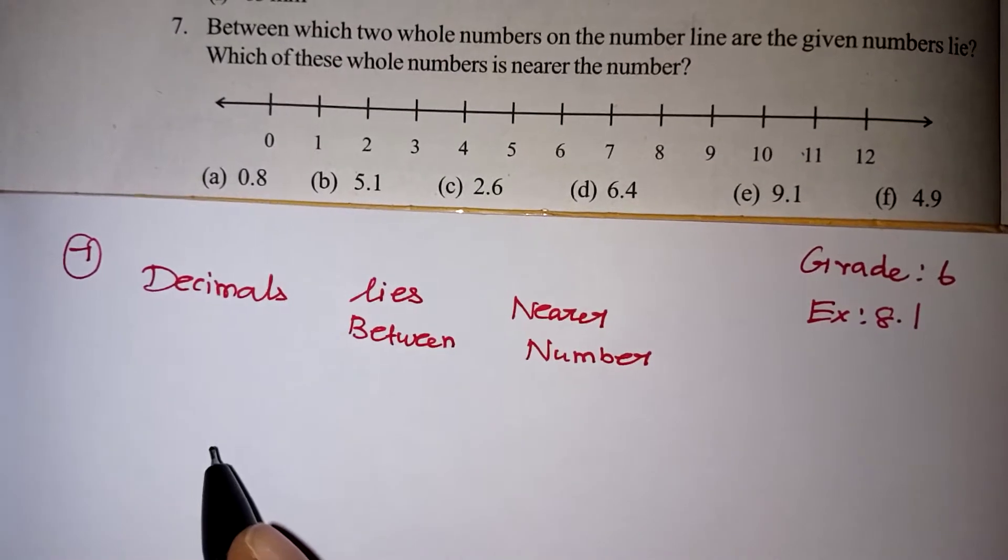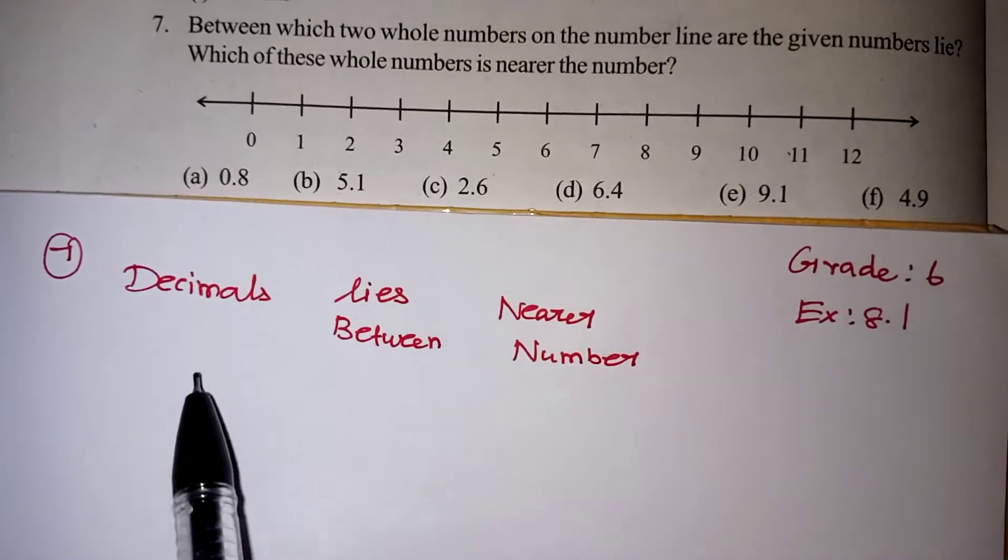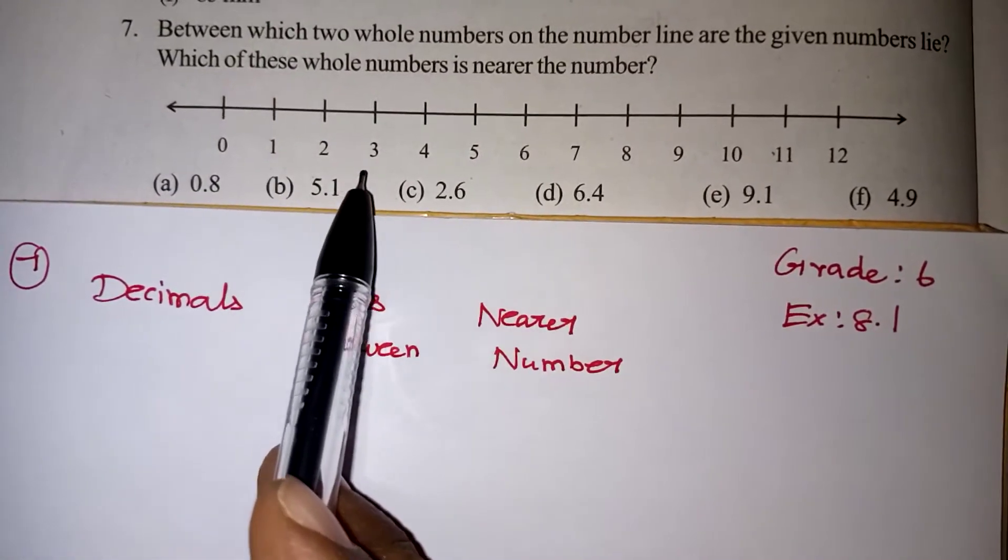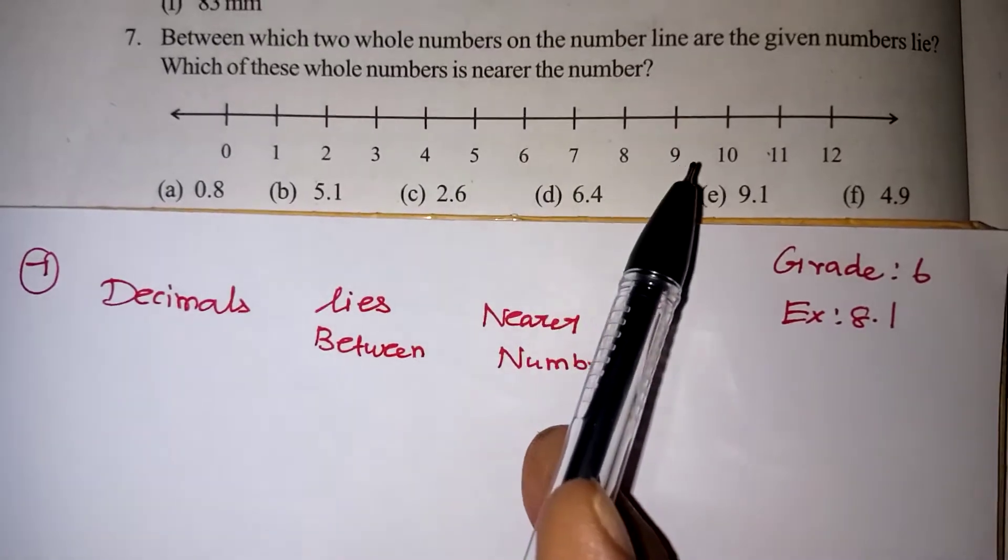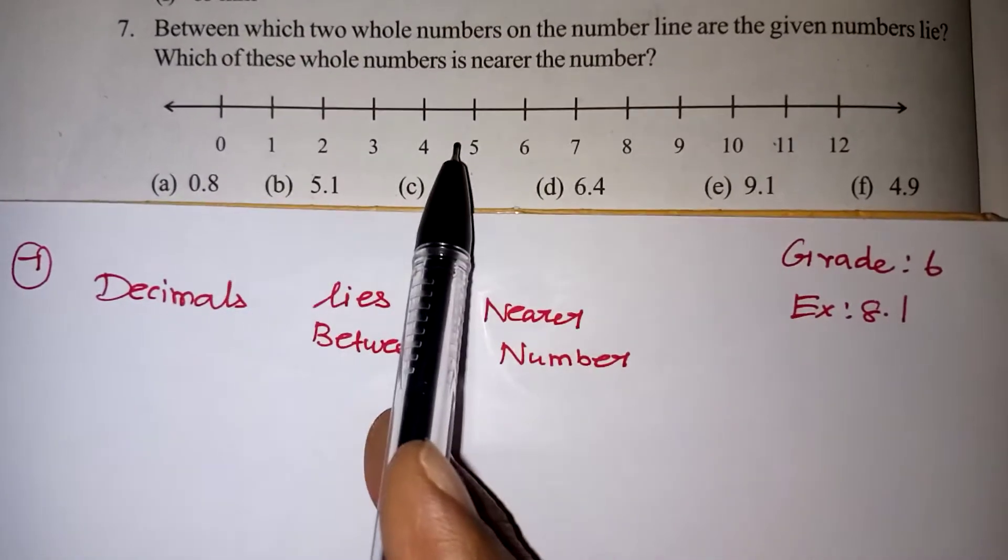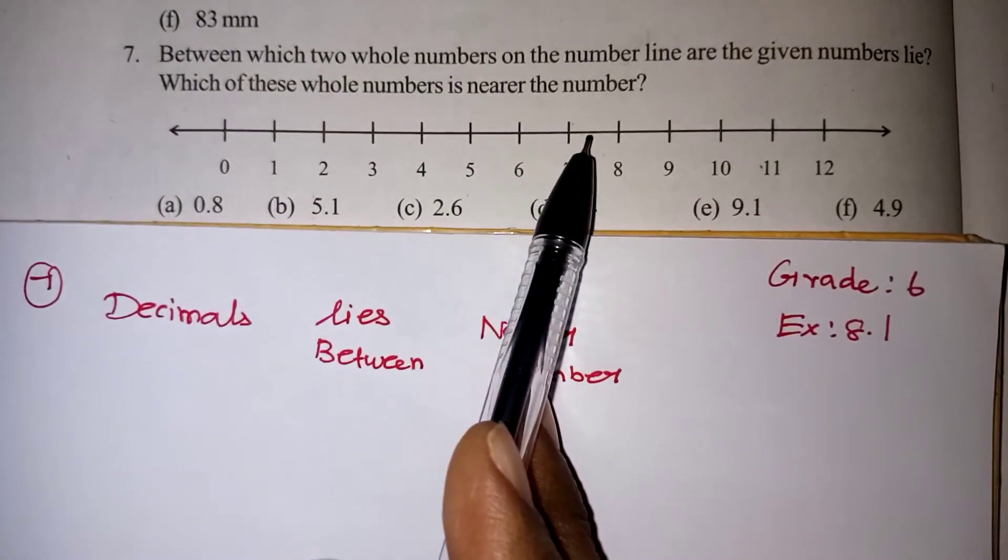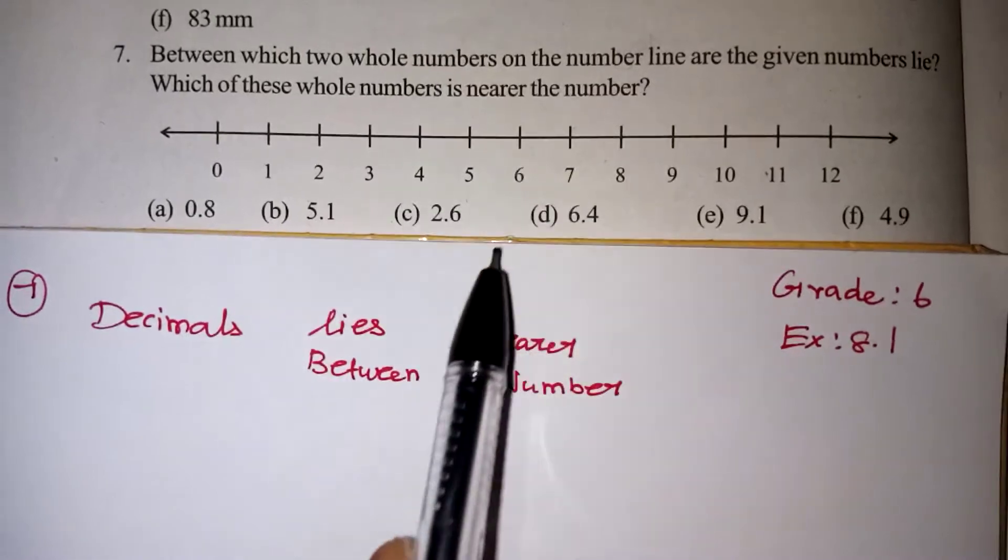Hi students, in this video we are going to learn exercise number 8.1, question number 7. Between which two whole numbers on the number line are the given numbers? That is the first question. Which of these whole numbers is nearest to the number?